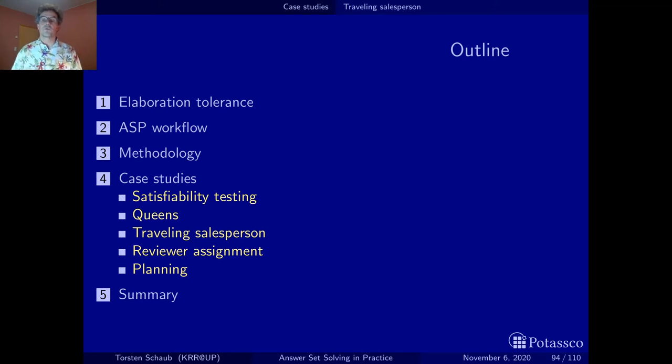The traveling salesperson problem is not only another NP-hard problem we are looking at, but moreover it adds a new quality to our problems and this is optimality. Now we are not satisfied by simply obtaining feasible solutions, we want the best among all feasible solutions. So we want optimal models.